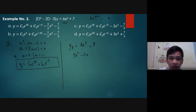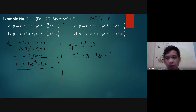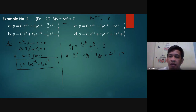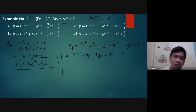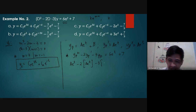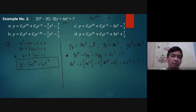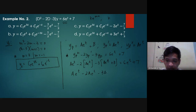From the given equation: yp double prime minus 2yp prime minus 3yp equals 6e to the t plus 7. Taking derivatives: yp prime equals ae to the t and yp double prime equals ae to the t. Substituting: ae to the t minus 2ae to the t minus 3 times the quantity ae to the t plus b equals 6e to the t plus 7.